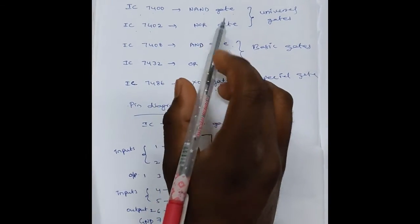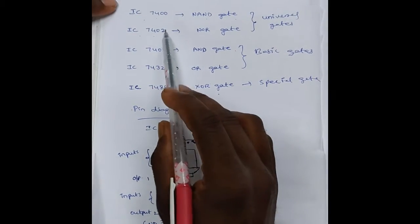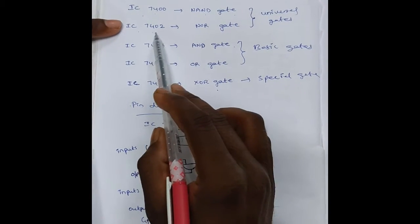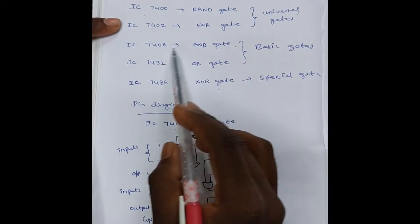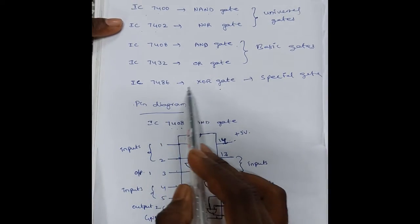IC means integrated circuit. These are the IC numbers: IC 7400 is NAND gate, 7402 is NOR gate, 7408 is AND gate, 7432 is OR gate, 7486 is XOR gate.